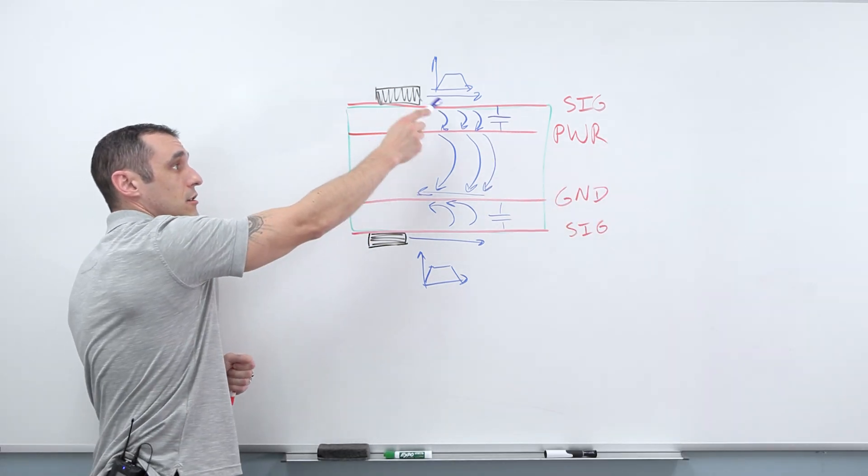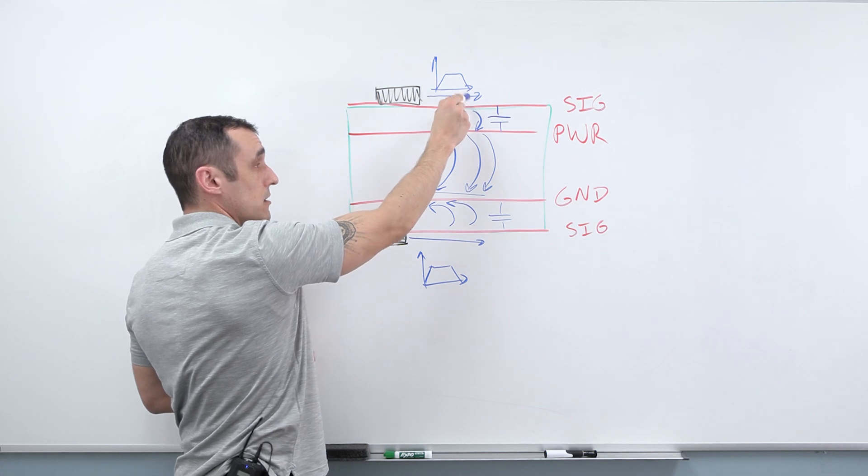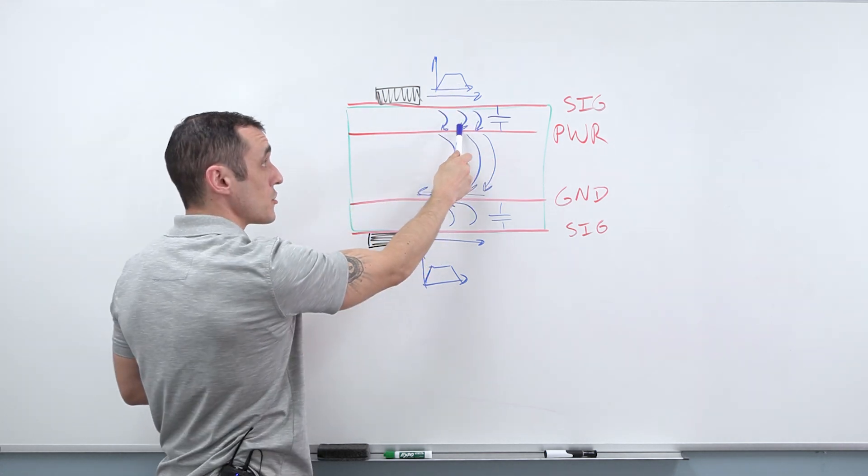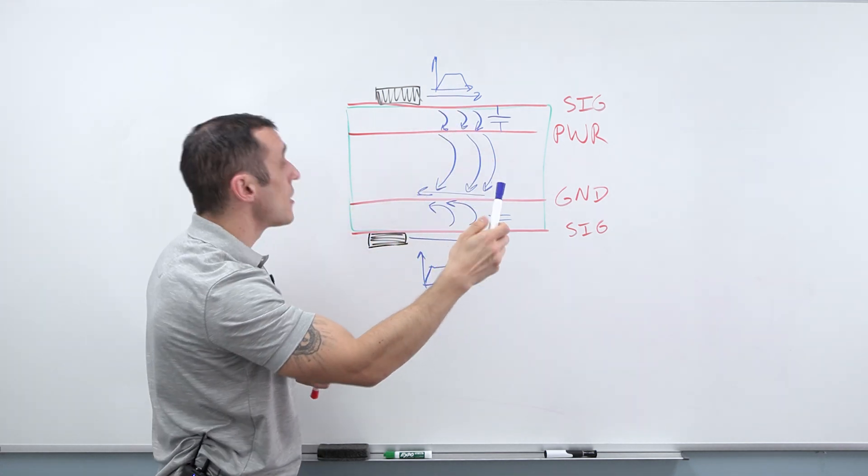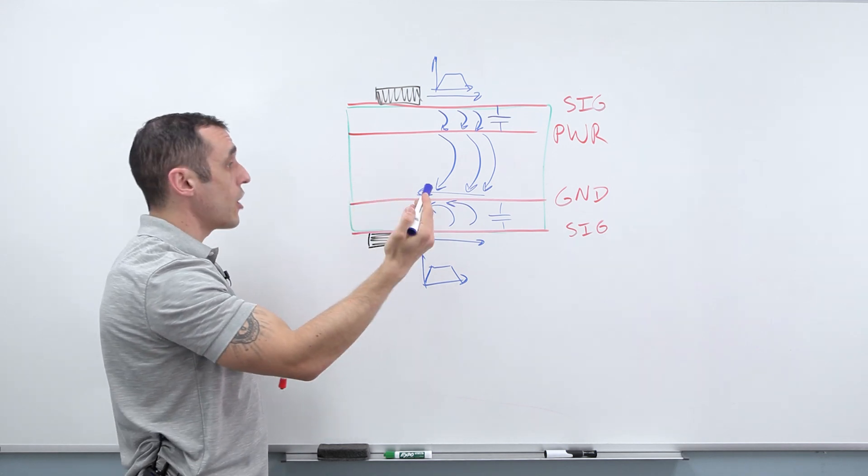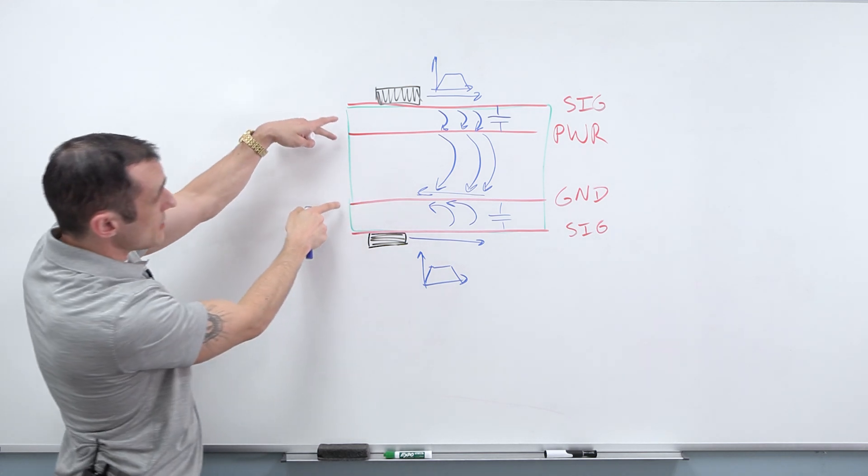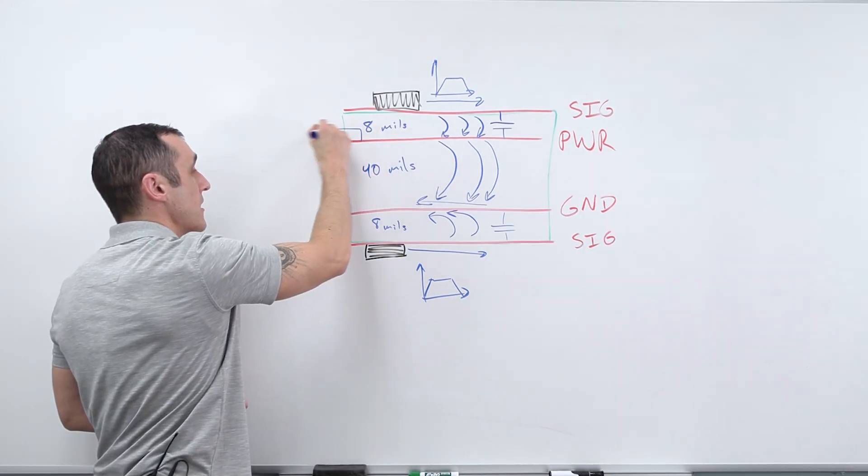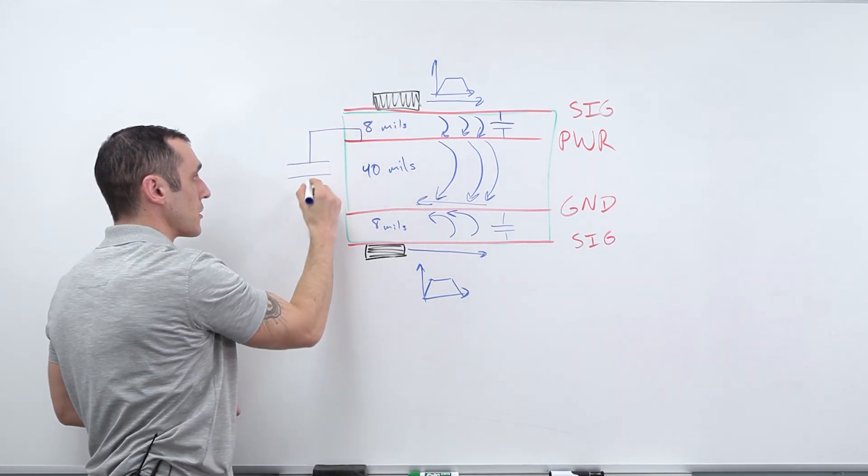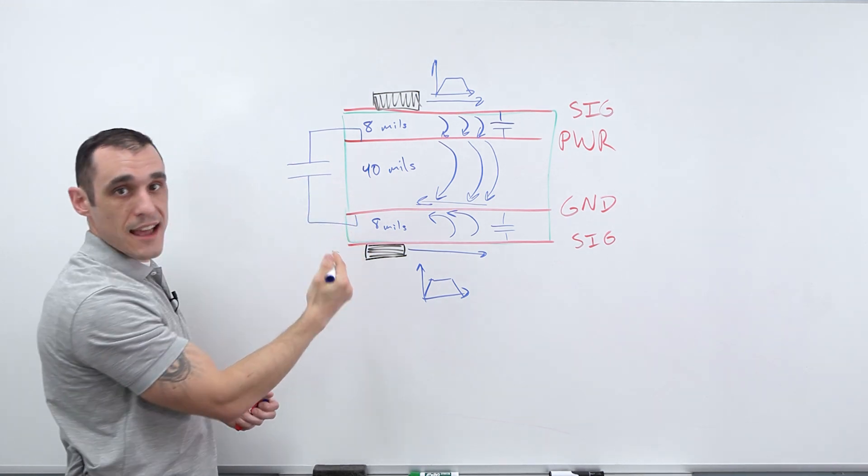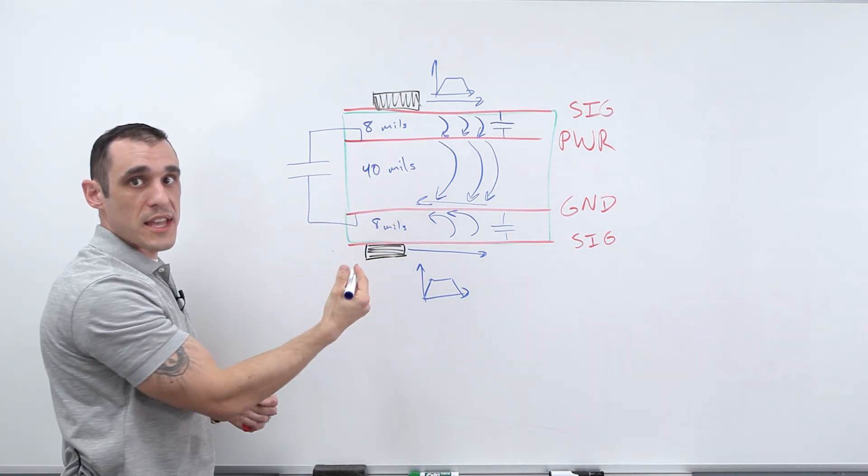However, the current that is induced in this power plane now attempts to couple back all the way across the stack up into the ground layer. This impedance here, this capacitive impedance between the traces in the signal layer and the traces in the power layer, that is actually relatively low compared to the capacitive impedance between these two planes.